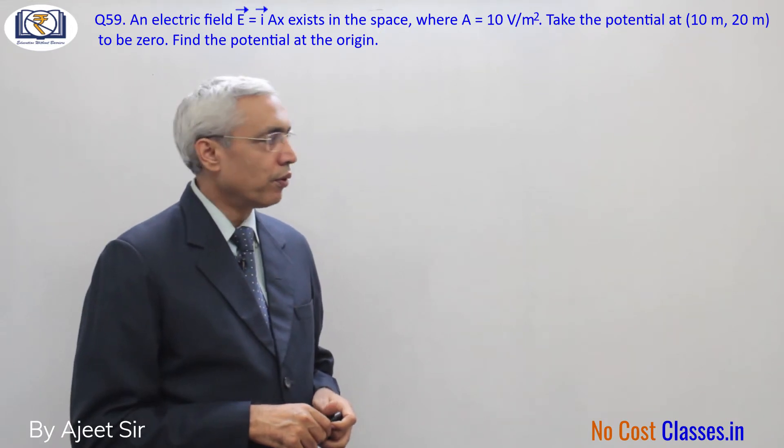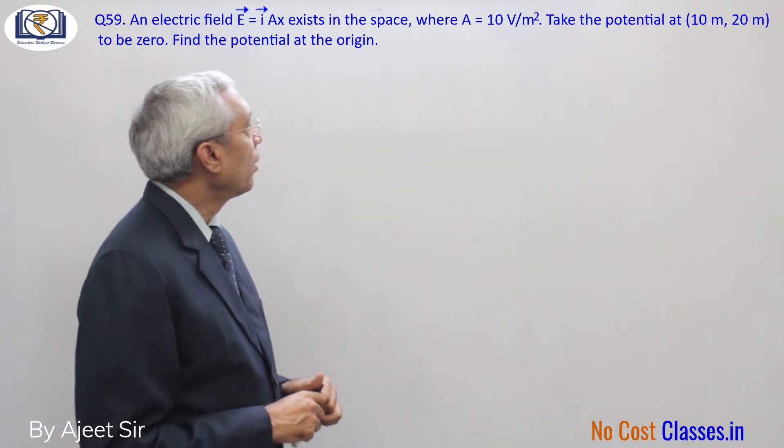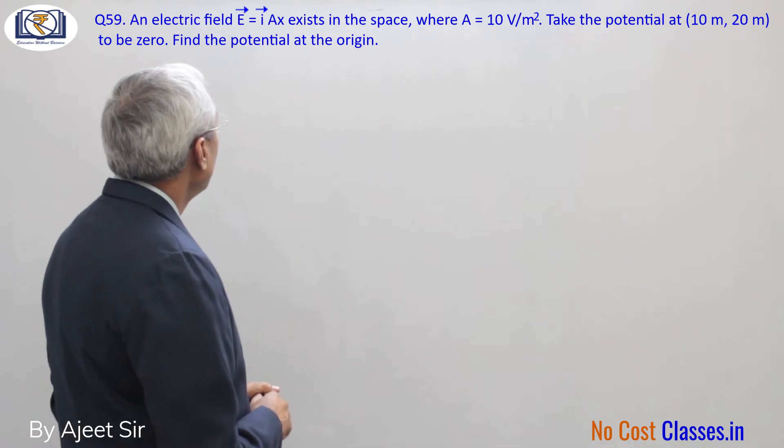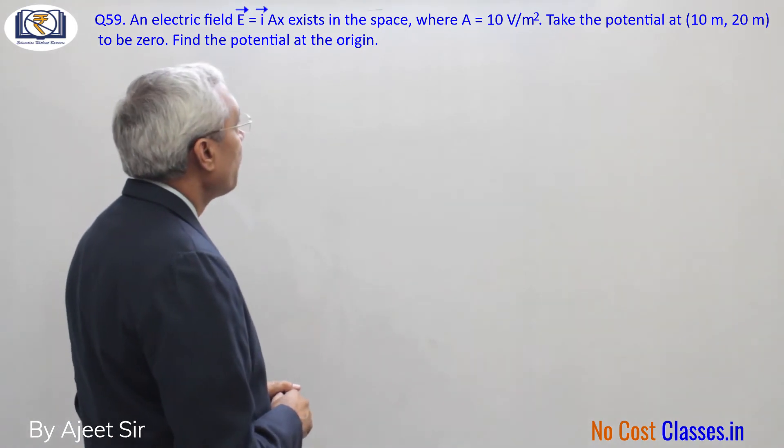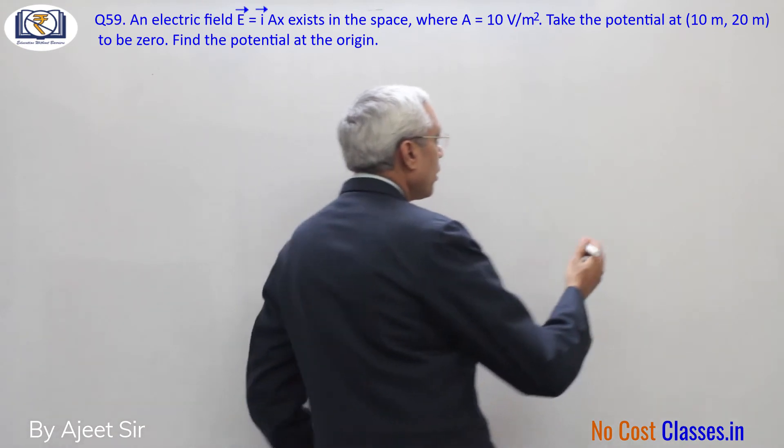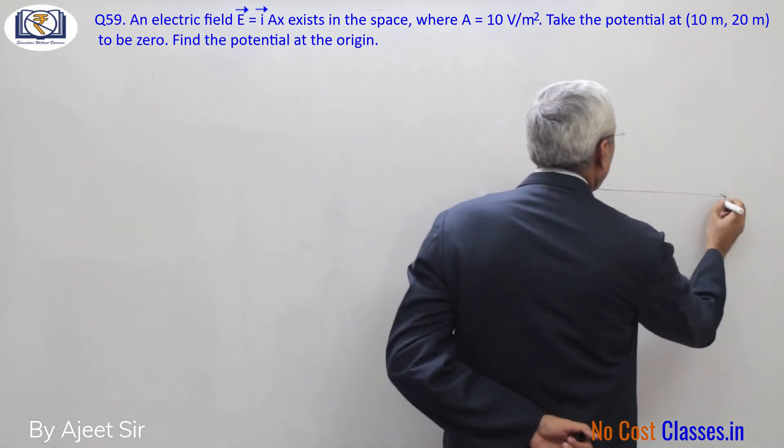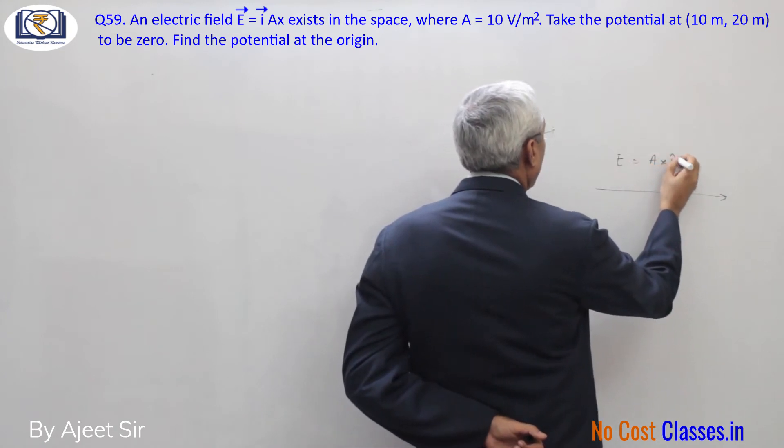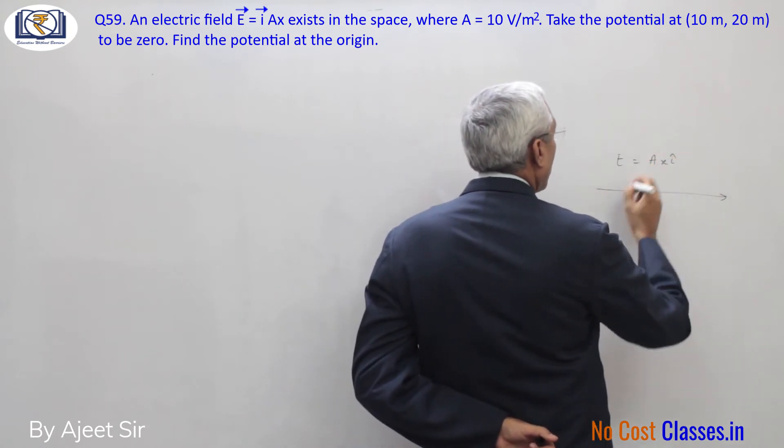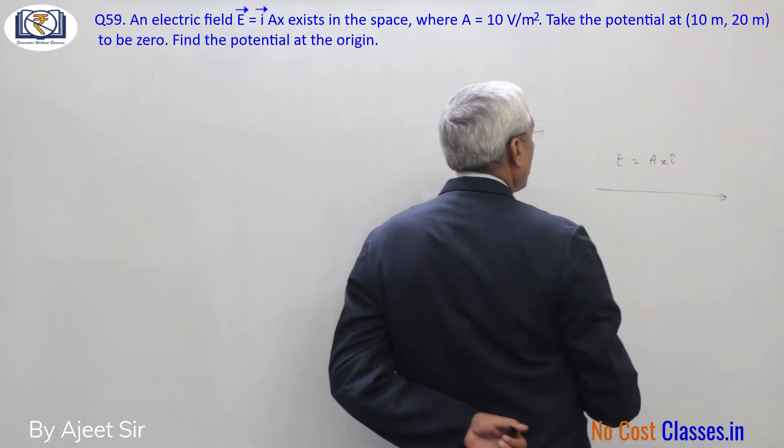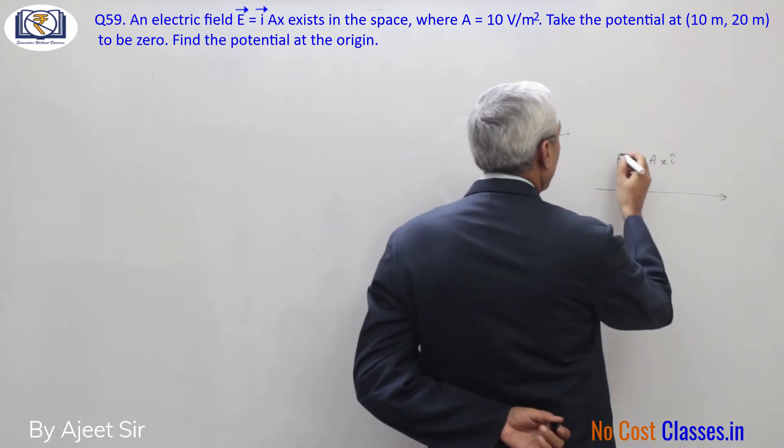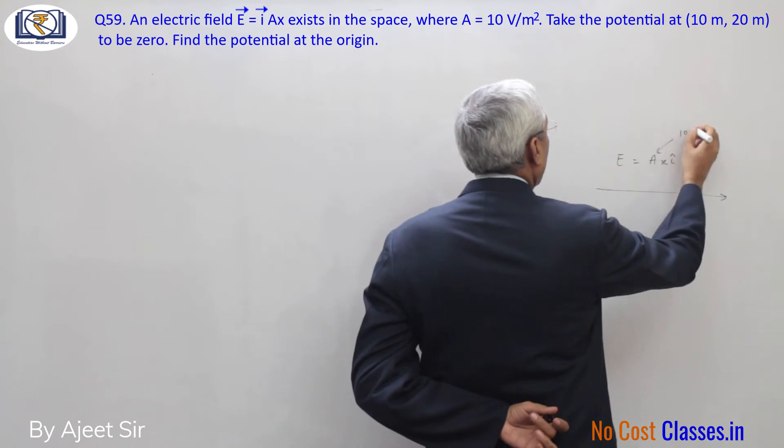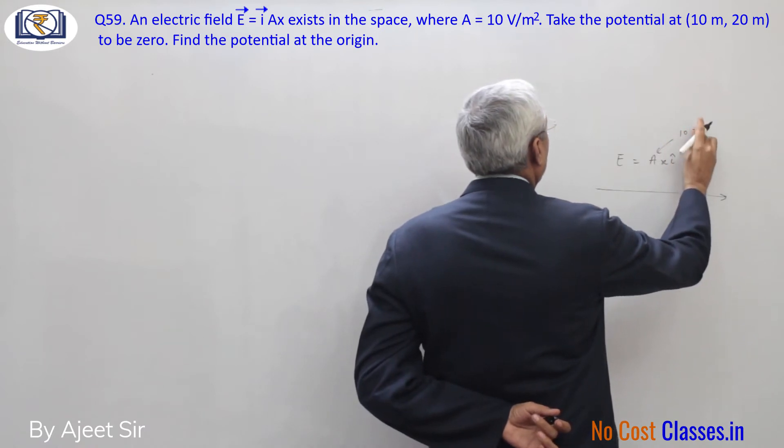Hello students, so in this problem it is given that the electric field is equal to Ax i-cap, which shows that the electric field is in the x direction and the value of A is 10 volt per meter squared.